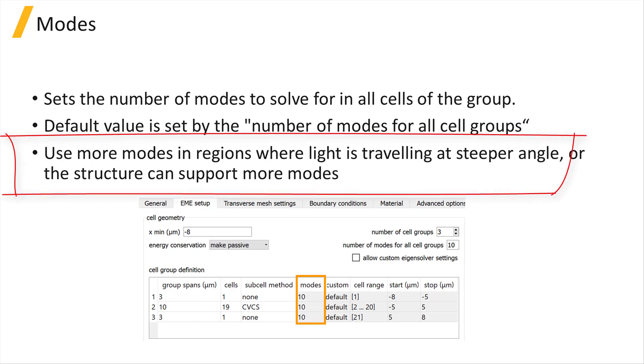Use more modes in regions where light is traveling at steeper angles or where the structure can support more modes. For example, the interference region of an MMI coupler or a free space region.